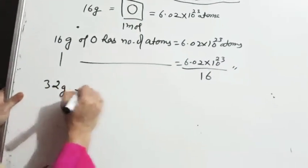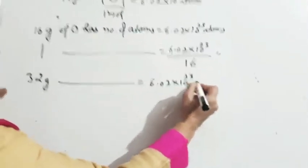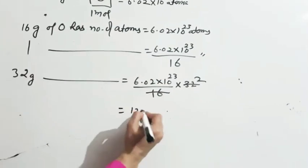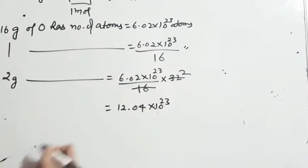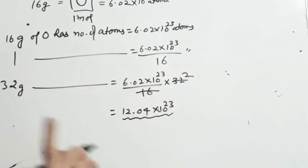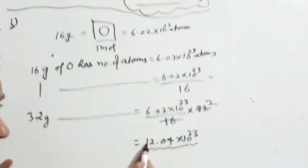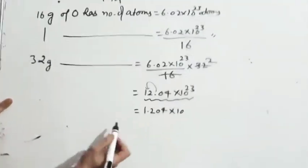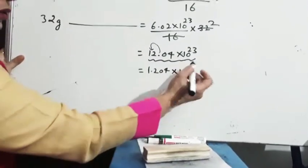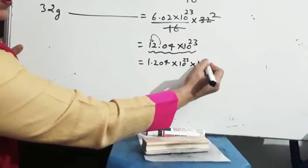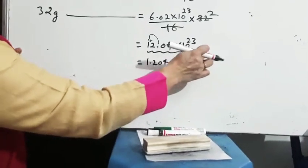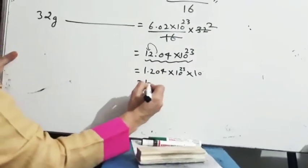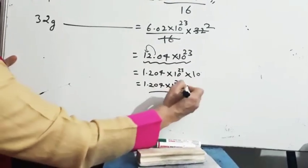और कितने में पूछी हैं? 32 gram के अंदर. तो: 6.02 × 10²³ upon 16, into 32. तो 16 से 32, 2 आया. 12.04 × 10²³. लेकिन significant figures के अनुसार decimal हमेशा एक non-zero के बाद लगेगा. तो इसको shift करना है: 1.204 × 10²⁴. क्योंकि decimal left side को गया, तो 23 + 1 = 24. Answer: 1.204 × 10²⁴ atoms.